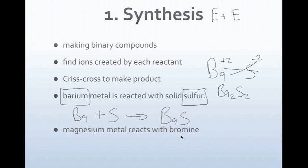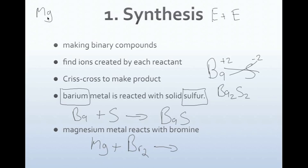Next, magnesium metal reacts with bromine. Magnesium is Mg — not a diatomic, so we leave it. Bromine is Br, and it is a diatomic, so we write Br2. Magnesium has a plus 2 oxidation number because it's in group 2, and bromine has a negative 1 oxidation number because it's in group 17. We crisscross to get MgBr2 as our product.